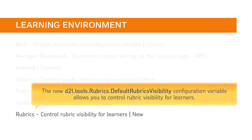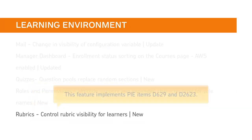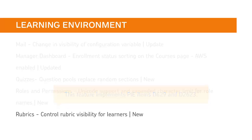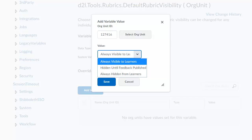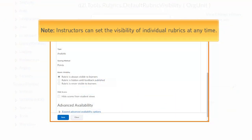The new D2L Tools Rubrics Default Rubrics Visibility configuration variable allows you to control rubric visibility for learners. This feature implements PI Items D629 and D2623. You can set rubric visibility to Always Visible To Learners, Hidden Until Feedback Published, or Always Hidden From Learners. Instructors can set the visibility of individual rubrics at any time when creating or editing one.